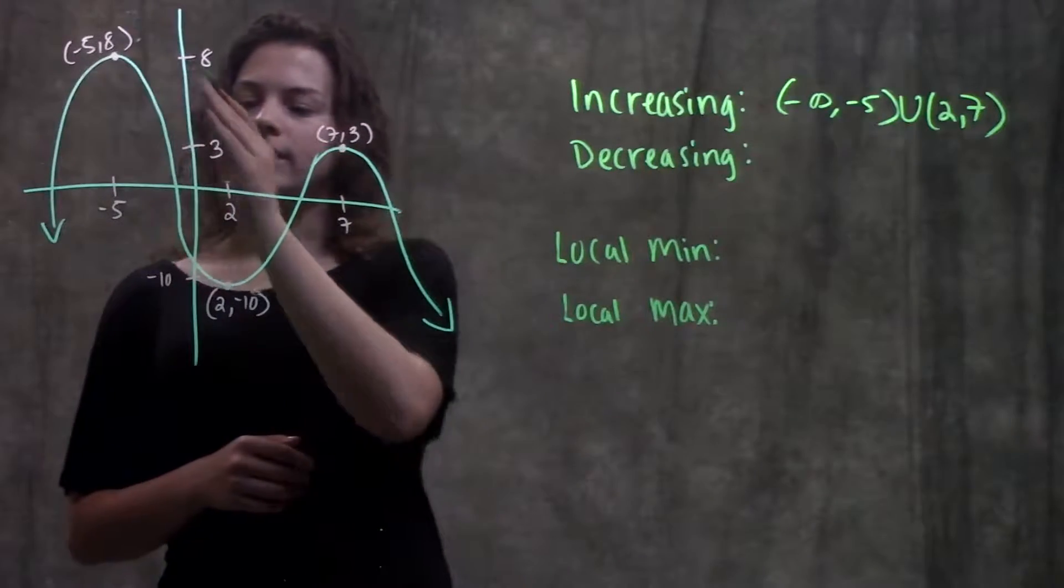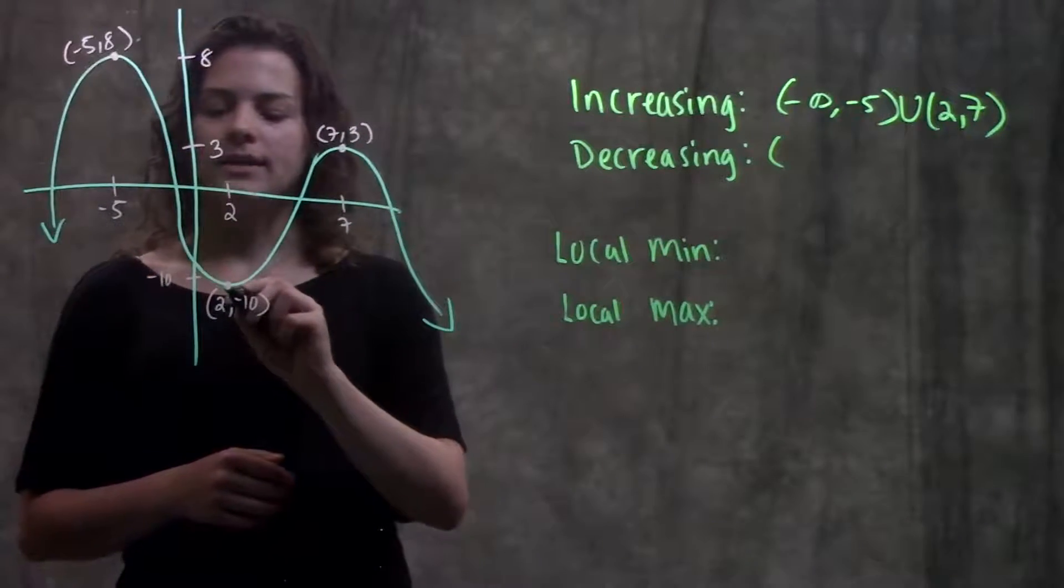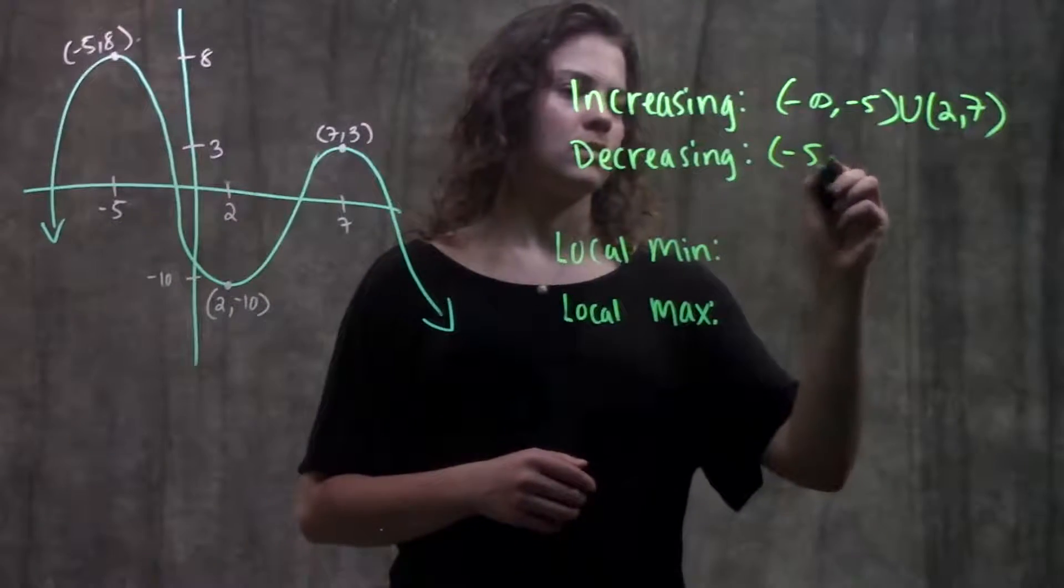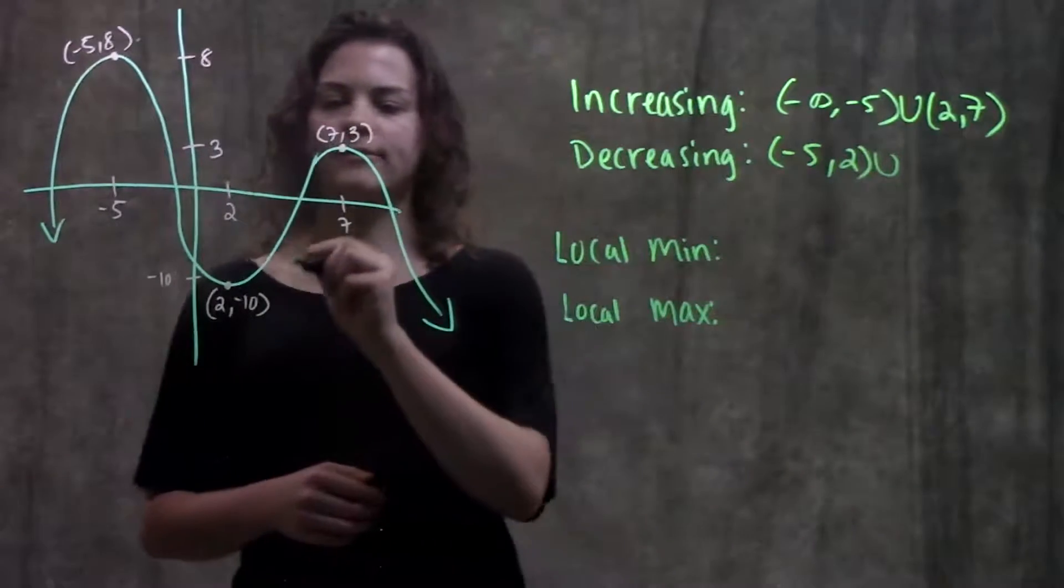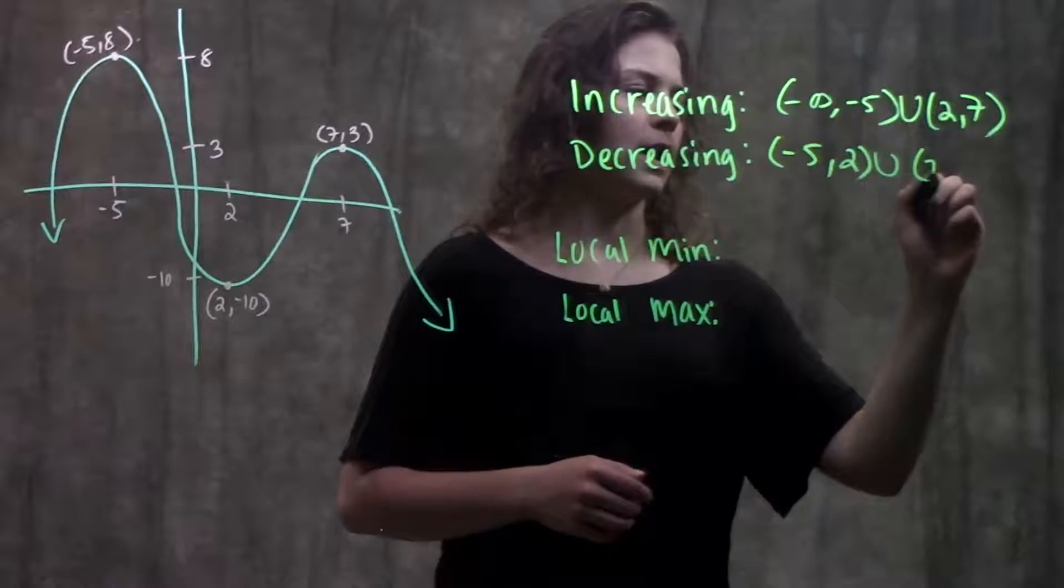So we have our intervals of increasing. Our intervals of decreasing are just all the in-between parts. We have from negative 5 down to positive 2, and from x equals 7 to positive infinity.